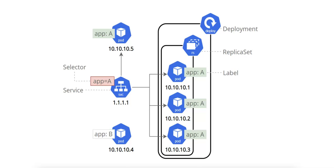Now let's talk about a Kubernetes service. A service is a Kubernetes resource that provides a stable network endpoint — a DNS name and IP — for accessing a set of pods. Since pods in Kubernetes are ephemeral and can be created, deleted, or moved at any time, a service decouples clients from directly accessing individual pods by providing a consistent way to route traffic to the appropriate pods. Key features include load balancing — distributing traffic evenly across pods matching its selector — and a stable IP address and DNS name, which abstracts away the dynamic nature of pods.